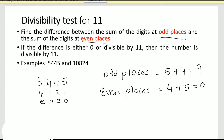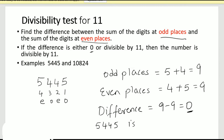The sum of the digits at even places is four plus five, which is also nine. The difference is nine minus nine, which is zero. Since we get zero, that means 5445 is divisible by eleven. Let's take the next example: 10824.